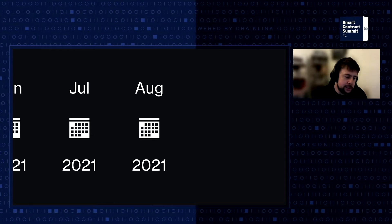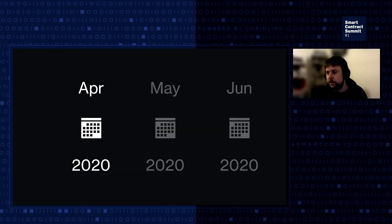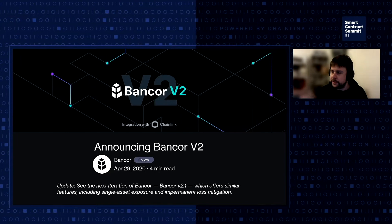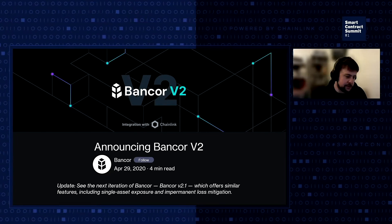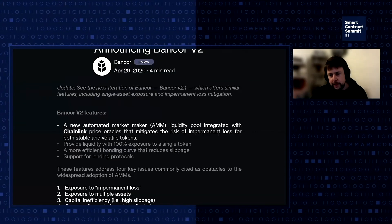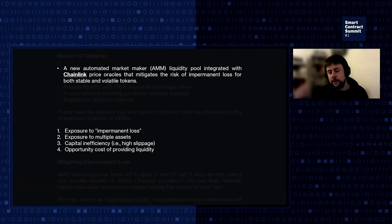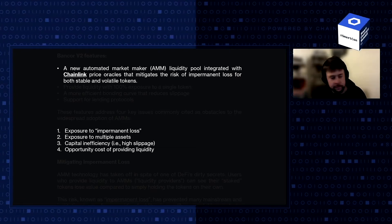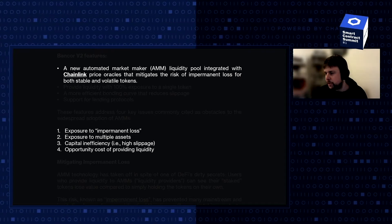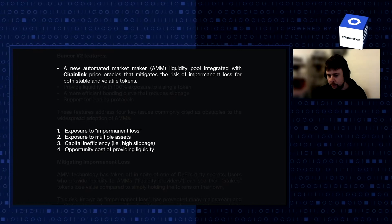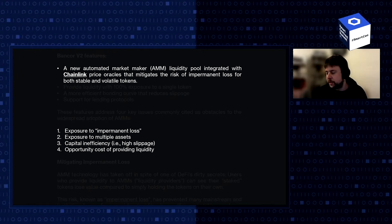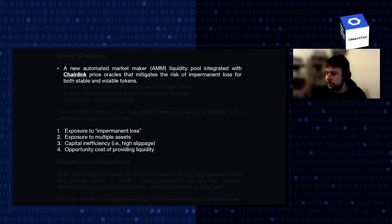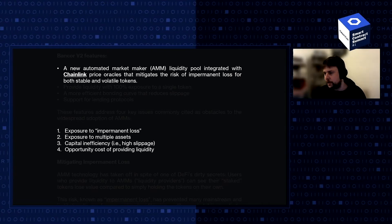To start the story, we need to go back in time to about April of last year. This is when Bancor first announced its version 2, and this had a very, very strong integration with Chainlink price oracles. The mission statement for Bancor version 2 was to really try and alleviate four of the main pain points for the use of AMMs by everyday people: exposure to impermanent loss, the involuntary requirement to be exposed to multiple assets at once, capital inefficiency, and the opportunity cost of providing liquidity.